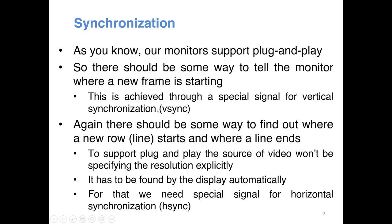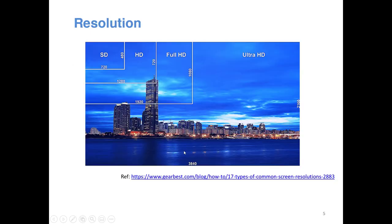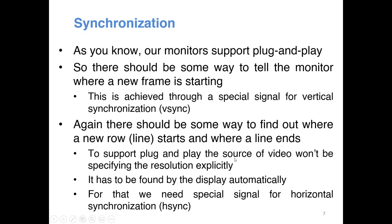There are special signals sent by the video source which help the display synchronize with the video. We have two kinds: vertical synchronization and horizontal synchronization. Vertical sync tells the display where a frame is starting. Horizontal synchronization tells what is the duration of a particular line. On the display there are multiple lines — for 1080p there are 1080 horizontal lines — and synchronization enables the display to determine where a line starts and ends.